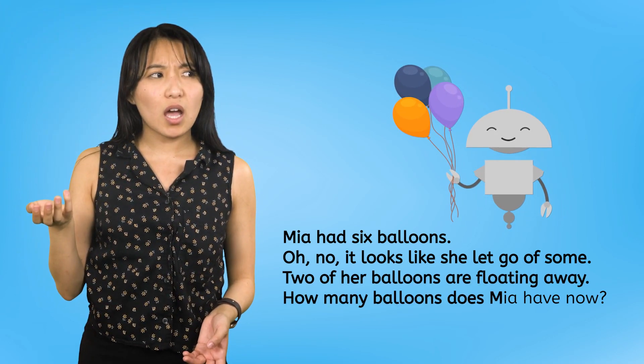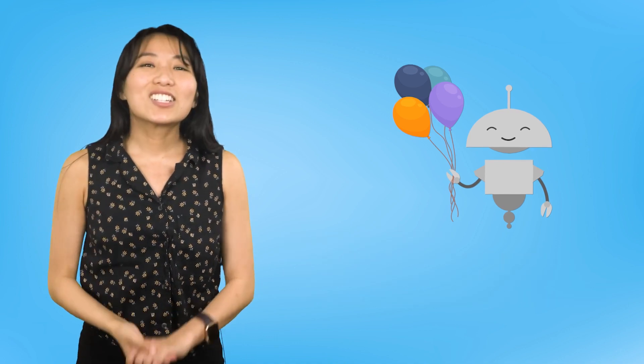How many balloons does Mia have now? To turn this number story into a number sentence, we need to ask ourselves: How many balloons did Mia have in the beginning? In this number story, Mia started with six balloons, so we write the six first. Just like in addition sentences, we need a symbol next.